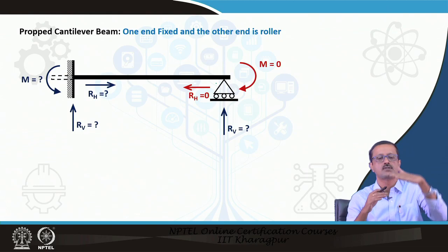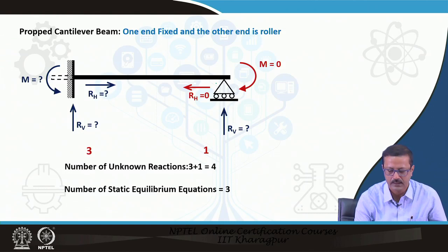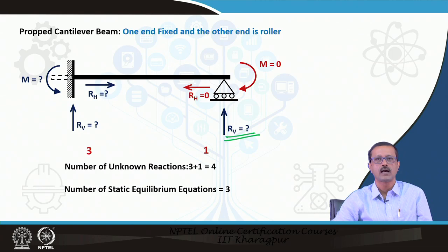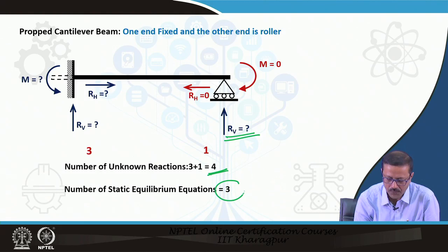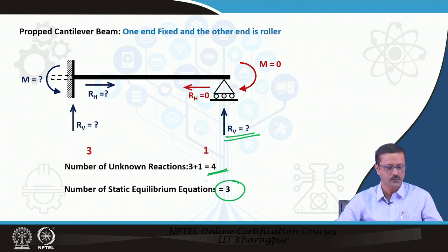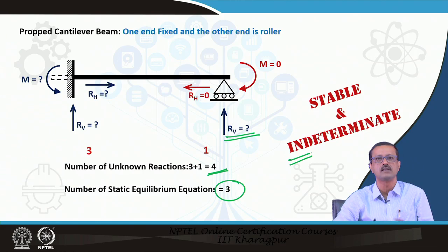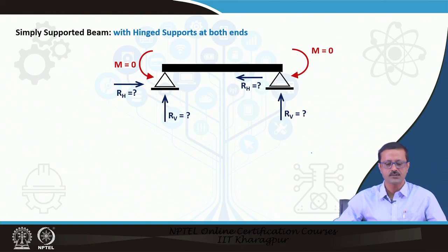A propped cantilever: if a roller prop is added to the free end of a cantilever, that end now has 1 additional unknown. The total becomes 3 + 1 = 4 unknowns, but only 3 equations are available. Therefore it is not possible to solve for all reactions using static equations alone — this beam is statically indeterminate.